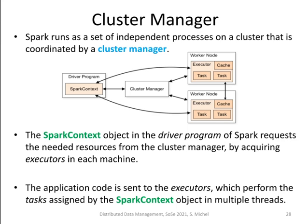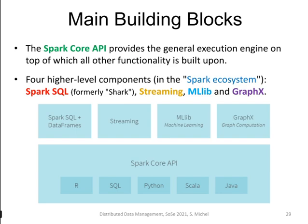From a high level, you have your program written — we call that the driver program. You are operating there with a so-called Spark context object, which handles the connection to the API that you can use to develop programs. When you form a package of your code and submit it to the cluster manager, the cluster manager will instantiate so-called worker nodes, similar to the concept of MapReduce and Hadoop, and your job is then executed in a data center. There is the underlying Spark Core API that you can use from within different languages like Scala and Java.